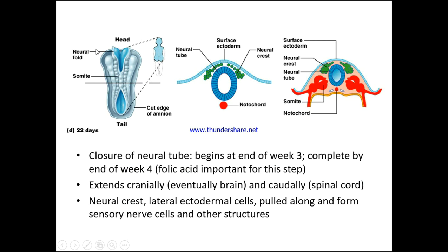By day 22, we start to see neural folding. We have the somite, the neural fold, the tail edge, and the cut edge of the amnion. Here we have the neural tube itself, the surface ectoderm, the neural crests, the notochord, and the somite. The neural crest, neural fold, intermediate mesoderm, lateral plate, splanchnic mesoderm, and somatic mesoderm are all visible, and we're going to look at how this ultimately fuses over into the midline to form the structures we see in adults.